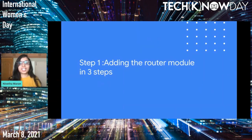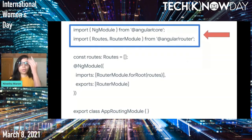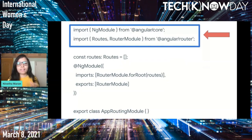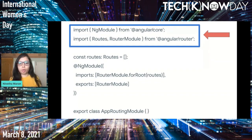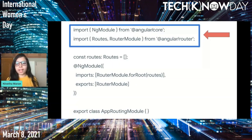The first step is adding the routing module. In any Angular web application there is a main source app file where we create the routing module. As highlighted in the code in the blue box, we start by importing NgModule from the Angular core package — the TypeScript decorator to create any Angular module. We also import RouterModule and Routes from the Angular Router package, which provides all the routing plugins and makes it easy for developers to create routes.